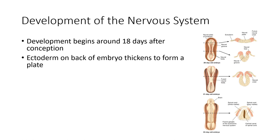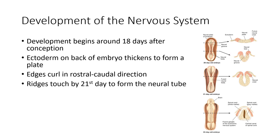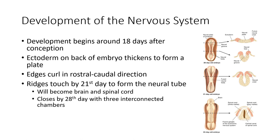The ectoderm is on the back portion of the embryo and thickens to form the neural plate, which will eventually become the forebrain at the top. Through development, the edges of this plate begin to curl upward. If you turn it sideways, it starts flat and over the course of days these folds curl upward, and by the 21st day of development the neural tube is formed. What was a flat plate becomes a complete tube in just a couple of days.